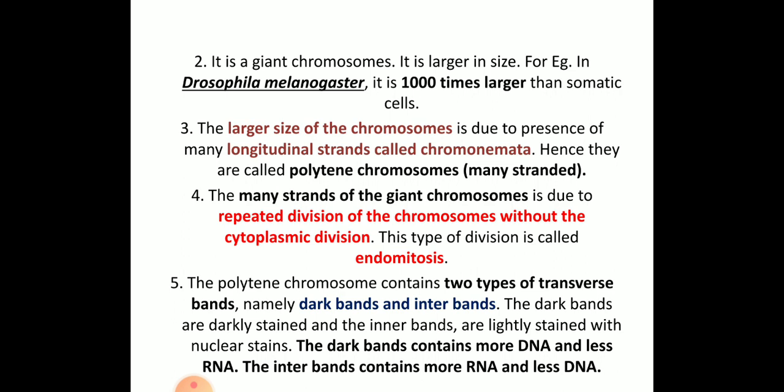The many strands arise due to repeated division of the chromosomes without cytoplasmic division, which is called endomitosis. These polytene chromosomes contain two types of transverse bands: dark bands and inter-bands.